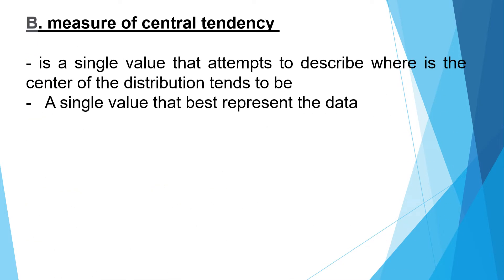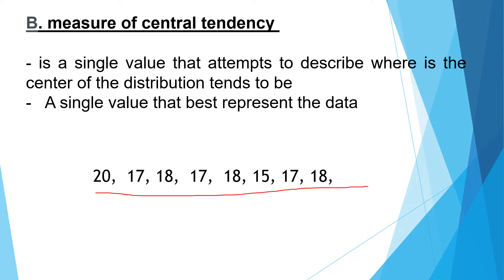Measure of Central Tendency is a single value that attempts to describe where the center of the distribution tends to be — a single value that best represents the data. For example, we have this data set: 20, 17, 18, 17, 18, 15, 17, and 18. Which of these given scores will best represent the entire data set? Will it be 20, 18, 15, 17, or will there be another number that represents the entire data set?